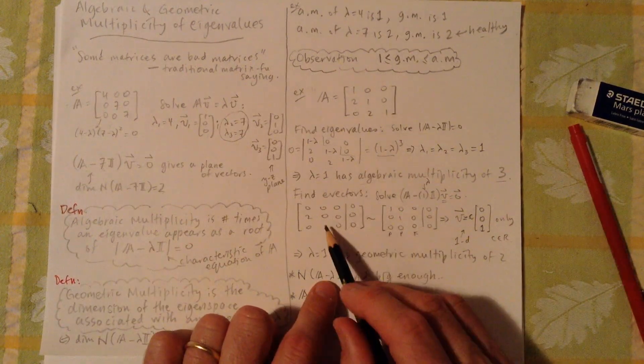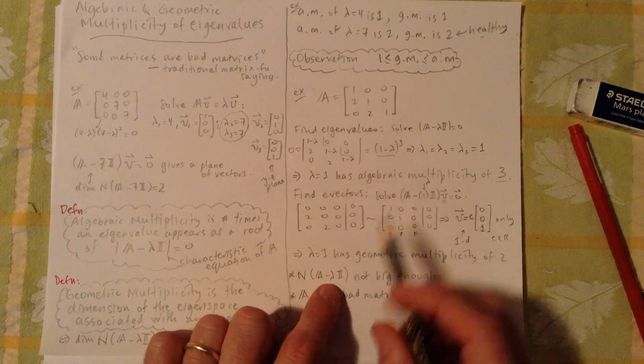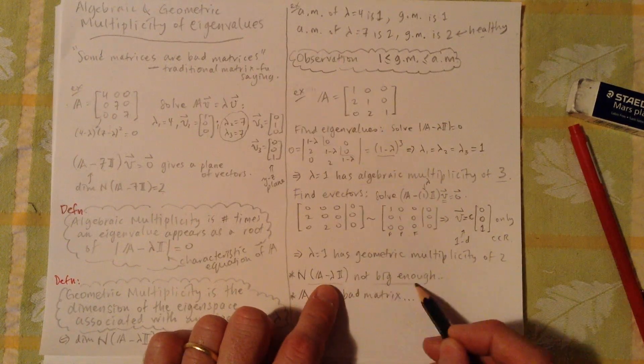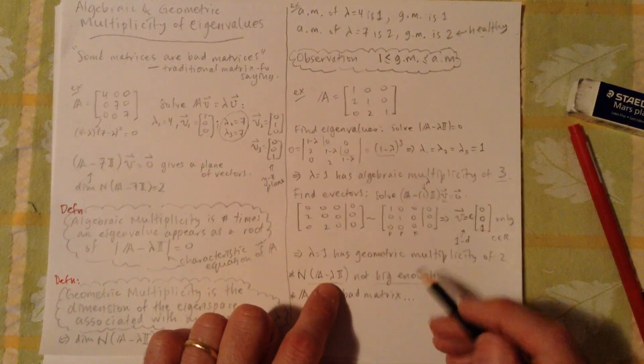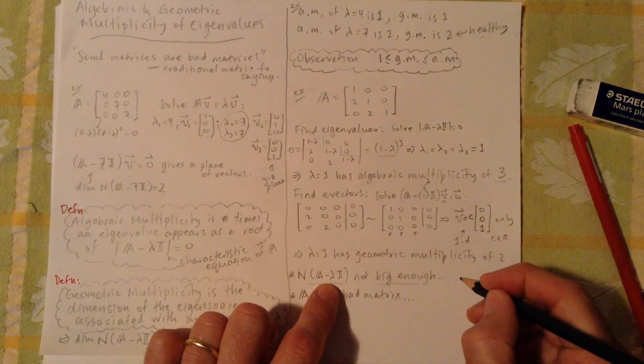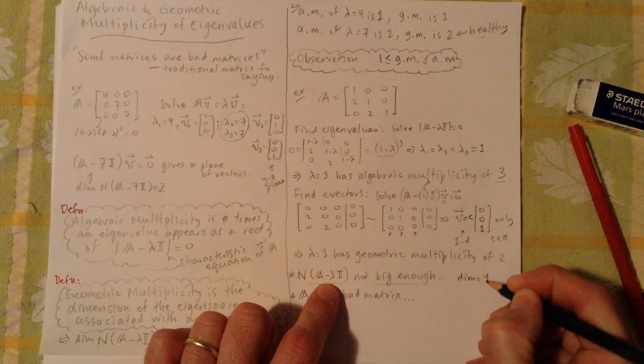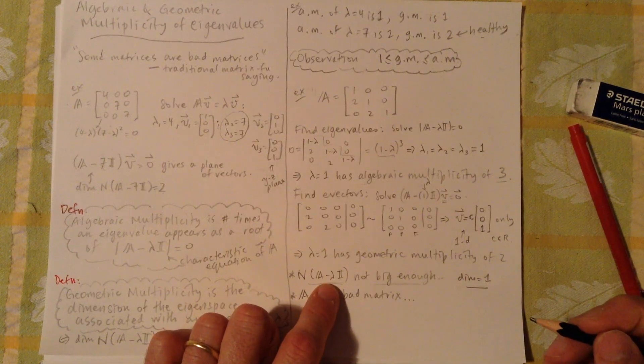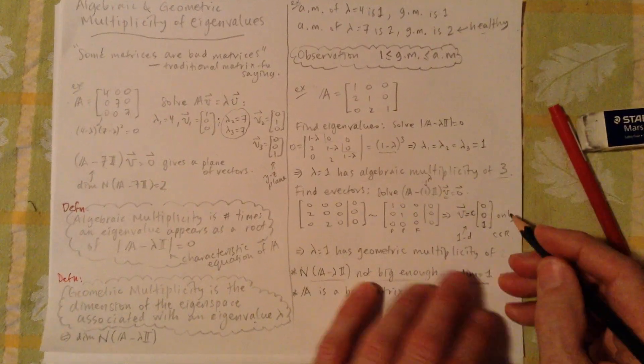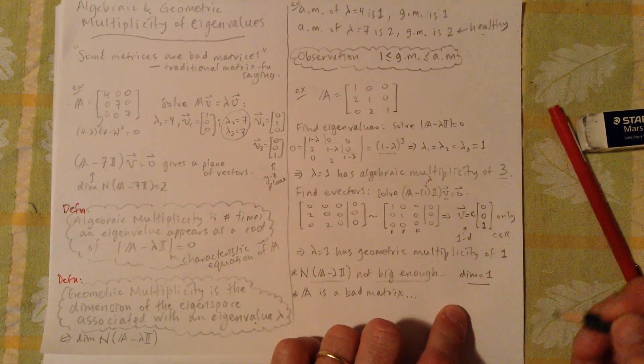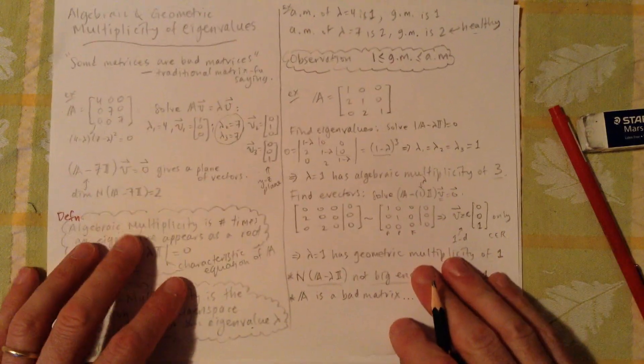The dimension of the null space associated with lambda equals one, it's not big enough. The null space is not big enough. It has only dimension of one. And we say that lambda equals one has a geometric multiplicity of one. So A is a bad matrix. It's a very bad matrix. It does not have a full complement of eigenvectors.